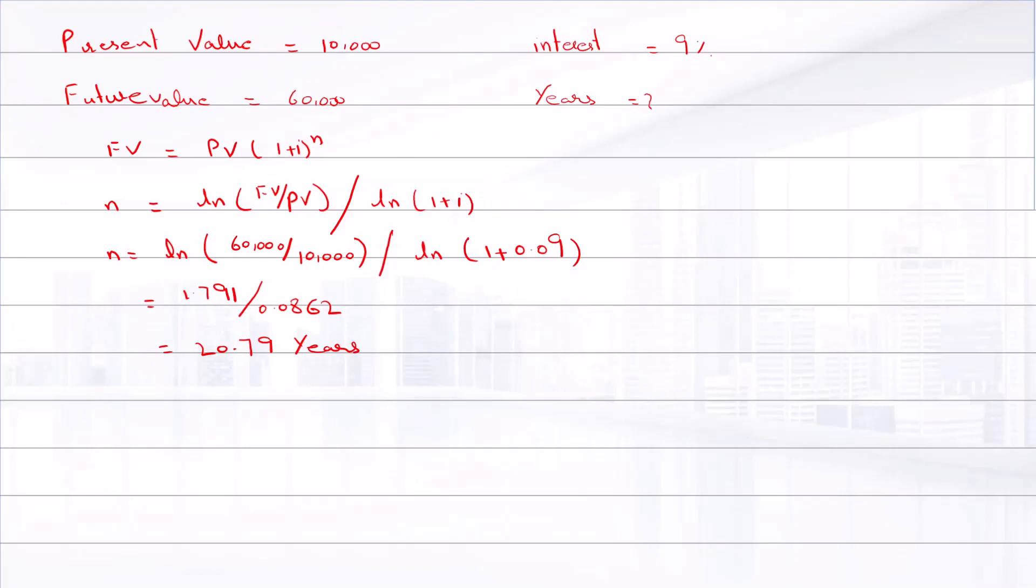However, you will not receive the money for another two years from now. You will wait two years plus 20.79 years. That is equal to 22.79 years.